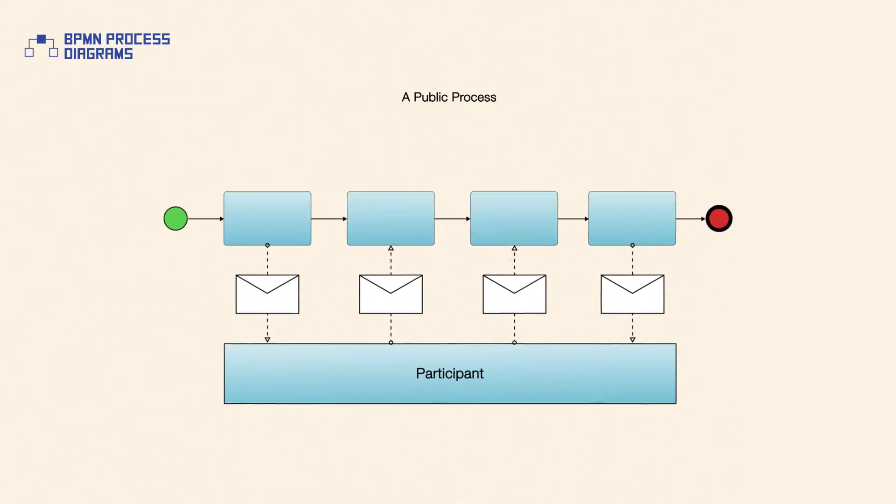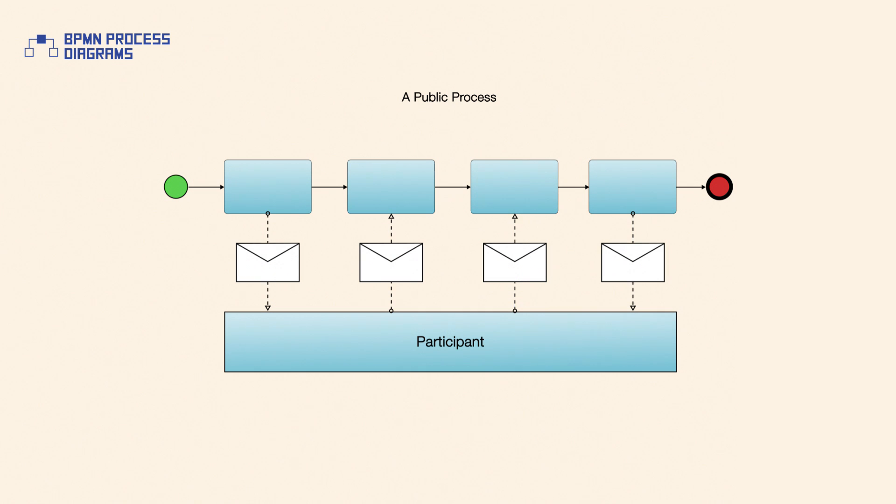A public process is used to show the outside world of a business process, the messages and the order of these messages that are needed to interact with that business process.